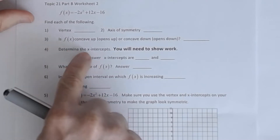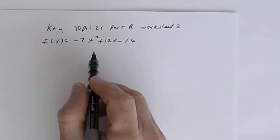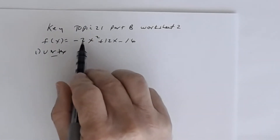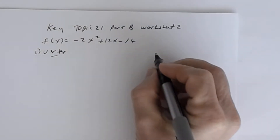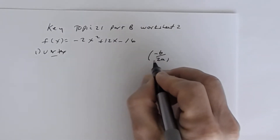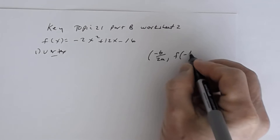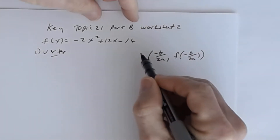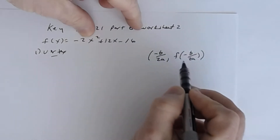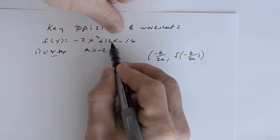You will also have to find the x-intercepts. Let's talk about the vertex. The formula for finding the vertex of a quadratic function written in general form: the x-coordinate is -b divided by 2a, and once you find the x-coordinate, you substitute that value into x in the quadratic function. Make sure you determine what a and b are. A is the coefficient of x², so that's -2, and b is the coefficient of x, so that's 12.